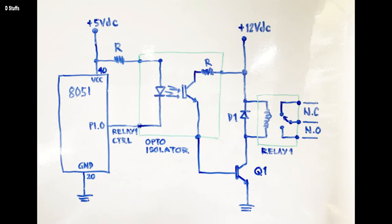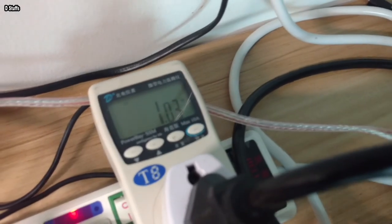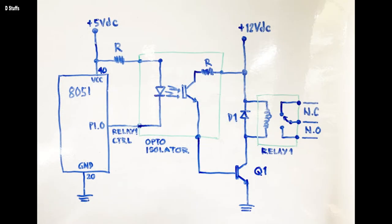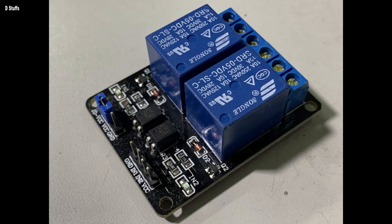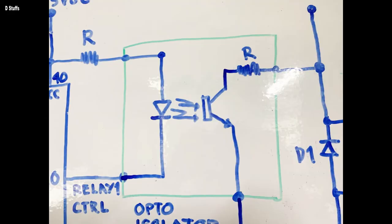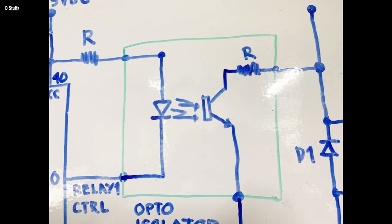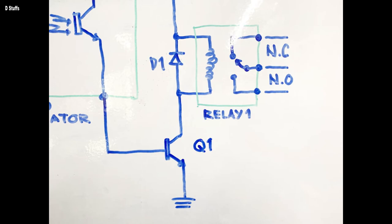Heto naman ang circuit ng relay. Ginagamit natin itong relay para sa tamang high voltage isolation ng household supply na 220 volts. Itong circuit na ito ay isa lang sa mga relay na pwede nating i-interface sa microcontroller. Itong circuit interface ay gumagamit ng opto-isolator para i-drive ang relay. Kapag nilagay natin ang relay 1 CTRL sa ground, ang secondary ng opto-isolator ay magkuklose dahil sa forward bias ng LED sa loob — i-ilaw ang LED sa loob ng opto-isolator, i-activate ang transistor, at i-activate niya ang relay 1 na dina-drive ng Q1 o transistor Q1.